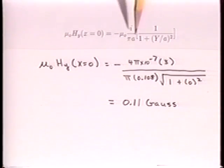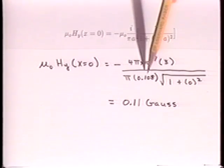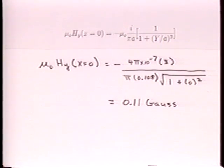So, A is 10.8 centimeters. The predicted flux density is then 0.11 gauss.